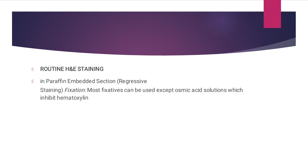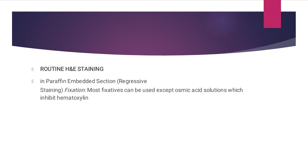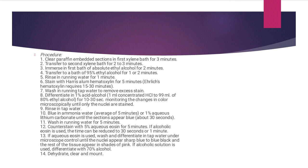For routine H&E staining in paraffin-embedded sections, regressive staining is used. Most fixatives can be used except osmic acid solutions, which inhibit hematoxylin. The procedure begins: first, clean the paraffin-embedded sections in the first silene bath for three minutes; second, transfer to the second silene bath for two to three minutes; third, immerse in the first bath of absolute ethyl alcohol for two minutes.